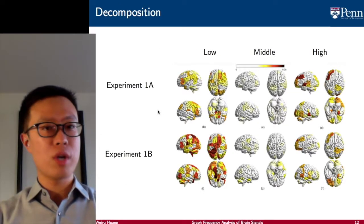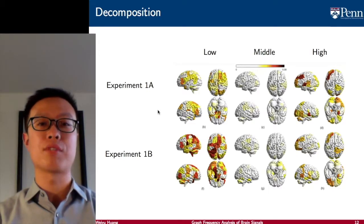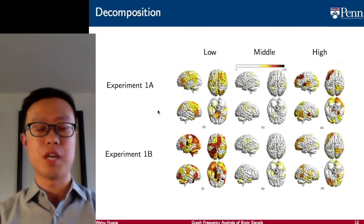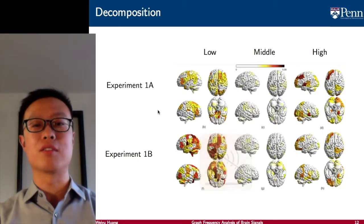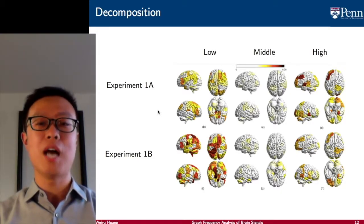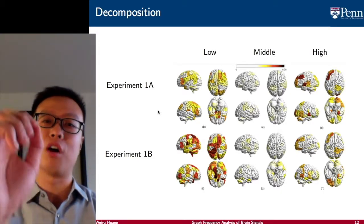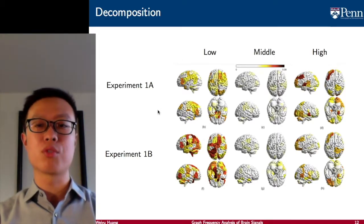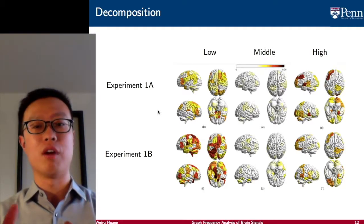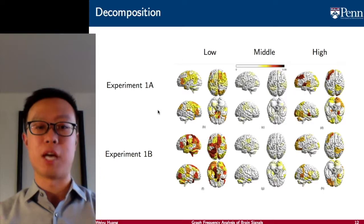The first question we want to ask is whether the decomposition in the graph signal processing domain gives us something interesting. The answer is yes. If we consider low frequency, middle frequency, and high frequency in the graph domain, what we found is that for the middle frequency, there is not much signal left when we consider the average across subjects in two different experiments. While in low frequency and high frequency, it is the opposite — there are highly similar areas that are active for different subjects and in different experiments as well.